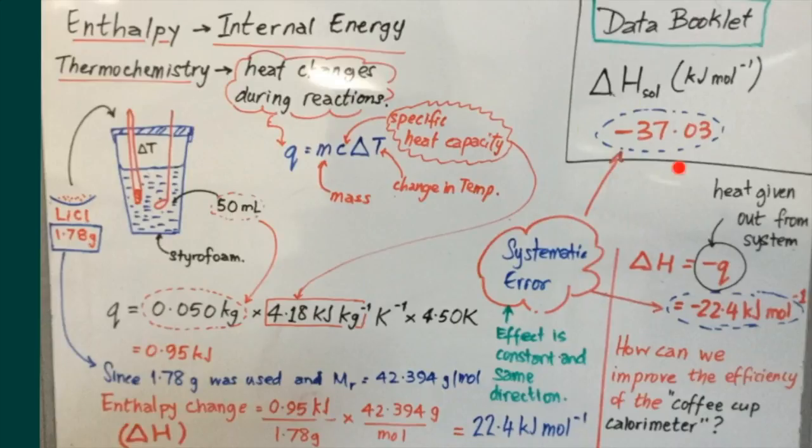Matching this value against the stated value in the IB chemistry data booklet of 37.03, we note that there is a significant difference between the two values. And this is due to the built-in error in our coffee cup calorimeter, which is certainly not an isolated system, and energy can be released from the system. But this type of error is described as a systematic error, for the effect is constant and always in the same direction. The value that you get for the enthalpy change from the coffee cup calorimeter will always be less than the actual value. And the percentage error for each time should be relatively consistent, meaning that the effect is constant and in the same direction.